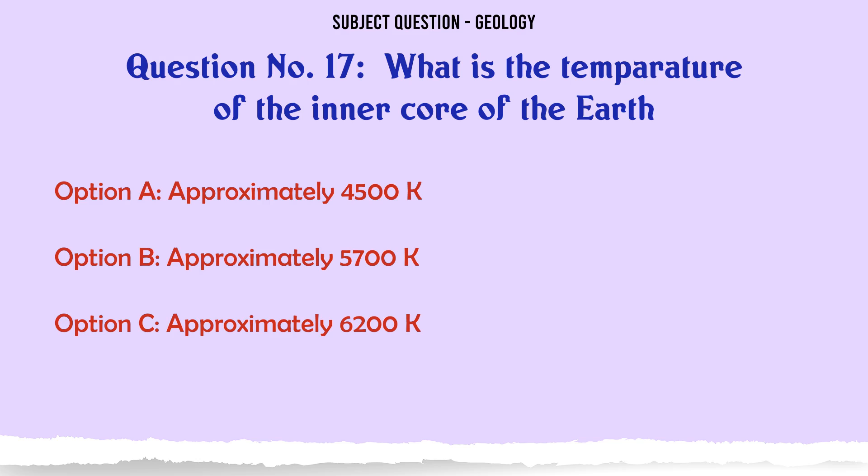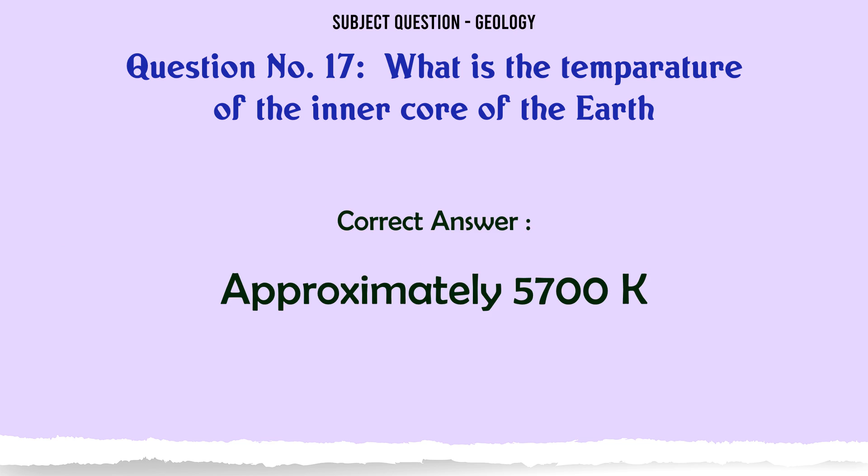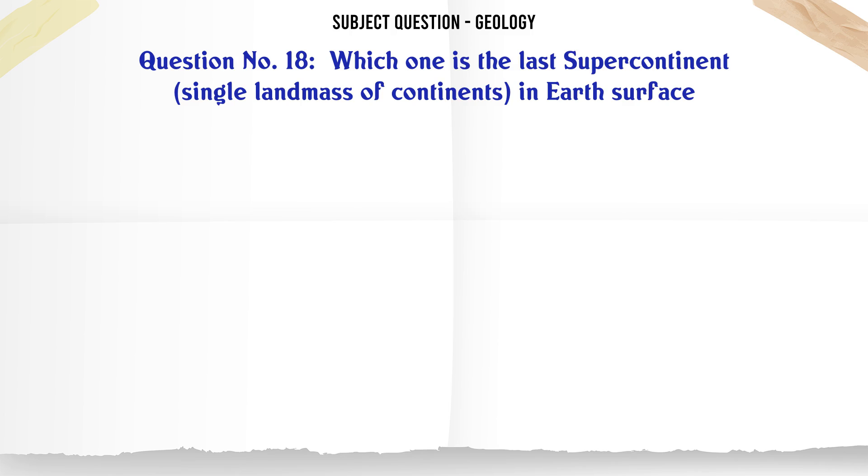What is the temperature of the inner core of the earth? A. Approximately 4,500 K. B. Approximately 5,700 K. C. Approximately 6,200 K. D. Approximately 6,800 K. The correct answer is approximately 5,700 K.